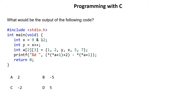Let's start with the question — it's a very important and good question that will take some time to solve. Here we have X = 9 & 12. Note that the single ampersand is bitwise AND, not logical AND. Logical AND always has double ampersand; single ampersand is bitwise AND.